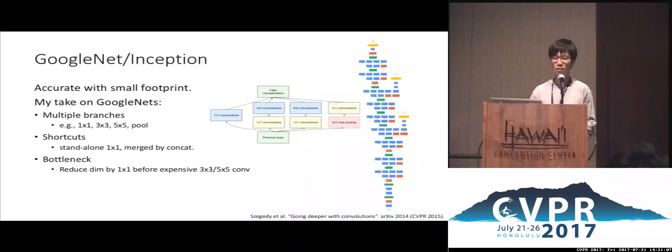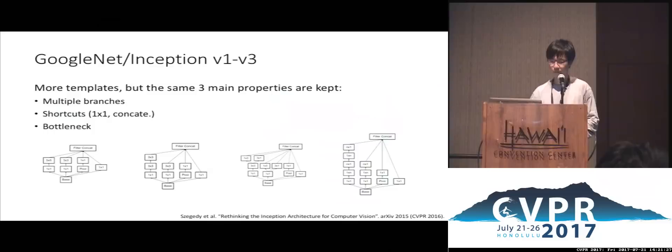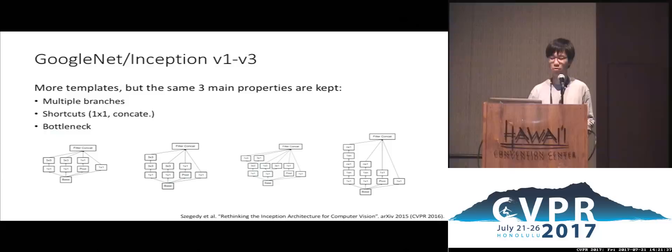GoogleNet is also a bottleneck architecture. For each inception block, there are 1×1 convolutions to reduce the number of channels before doing the expensive 3×3 and 5×5 convolutions — a bottleneck representation in terms of channels. There are many other versions of GoogleNet or Inception developed after that, but in my opinion all inception templates still have the same three main properties: multiple branches, shortcut, and bottleneck. These are the key components in GoogleNet's success.